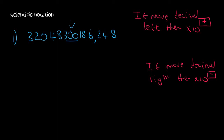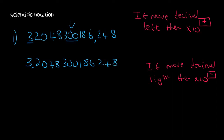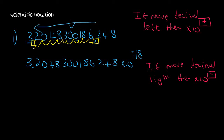In scientific notation, we always start with the first proper number that we can see, then fill in everything: 4, 8, 3, 0, 0, 1, 8, 6, 2, 4, 8. Now we need to see what we did with the decimal — it was here, now it is over here. That is 1, 2, 3, 4, 5, 6, 7, 8, 9, 10 places. So we say times 10. Now it might be a minus 10 or a positive 10 — we moved the decimal to the left, and if you move the decimal to the left, then it's a positive number. So it's going to be times 10 to the 10.